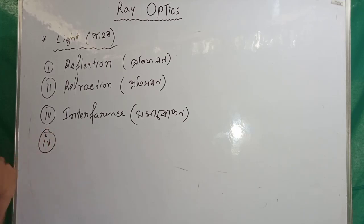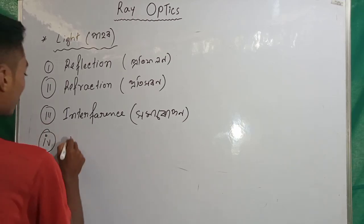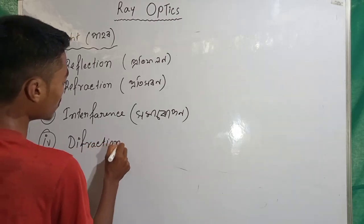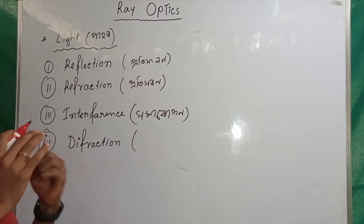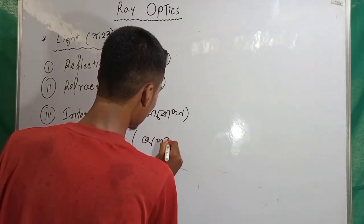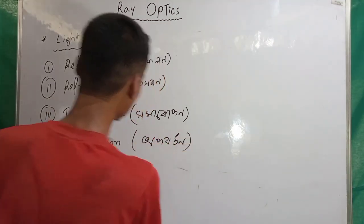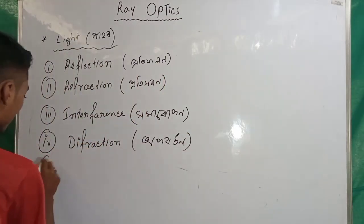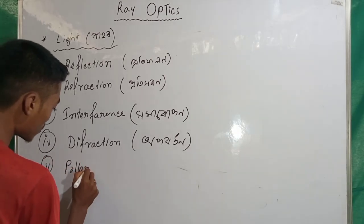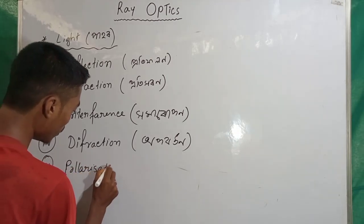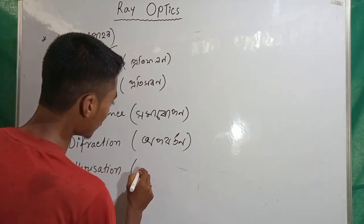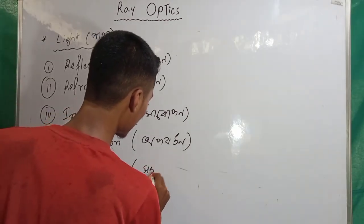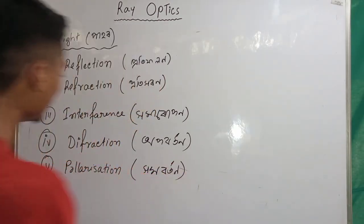The next point, the third number point, is diffraction. What does diffraction mean? After that, number five is polarization. What does polarization mean? It is superposition (Homarupon).